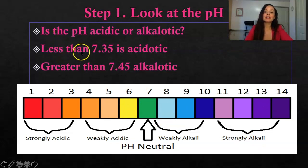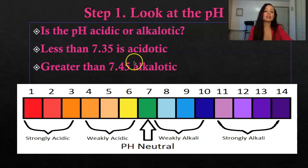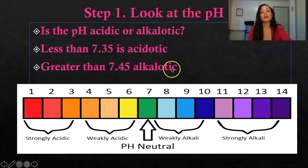If the pH is less than 7.35, it is considered acidotic. Greater than 7.45 is alkalotic — there are many terms: alkalitic, alkalotic, it's the same thing. The normal pH range is 7.35 to 7.45.